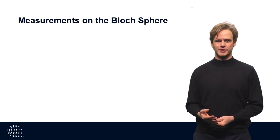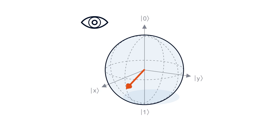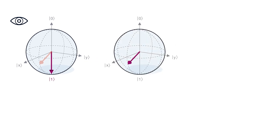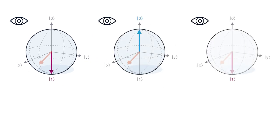If we do a measurement on a qubit in a certain basis, its wave function will collapse to one of the basis states, with a probability given by the Born rule. We can make this more intuitive by looking at an example on the Bloch Sphere.